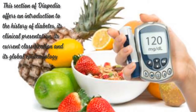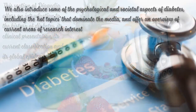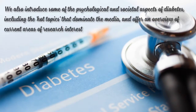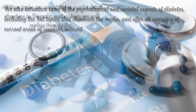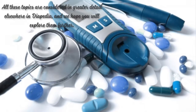This section of Diapedia offers an introduction to the history of diabetes, its clinical presentation, its current classification, and its global epidemiology. We also introduce some of the psychological and societal aspects of diabetes, including the hot topics that dominate the media, and offer an overview of current areas of research interest. All these topics are considered in greater detail elsewhere in Diapedia, and we hope you will explore them further.